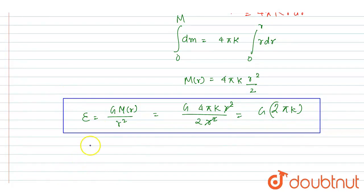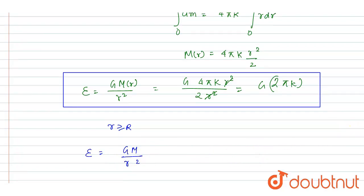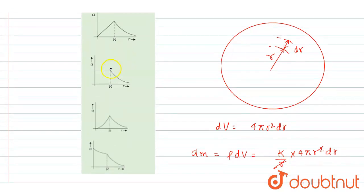Now after small r greater than capital R, the mass will become constant and you can simply write down the field. It will be simply the total mass by r square. So it will simply decrease with the increase in r. Now you can check for the option. So for smaller, up to R it is constant, and then it decreases. So B here is the correct option.